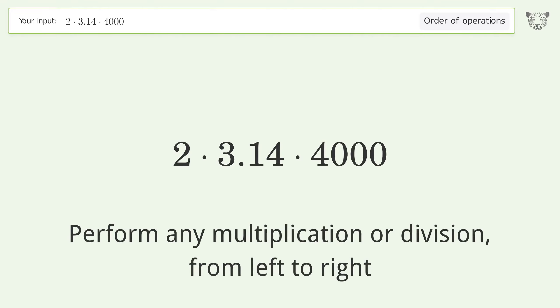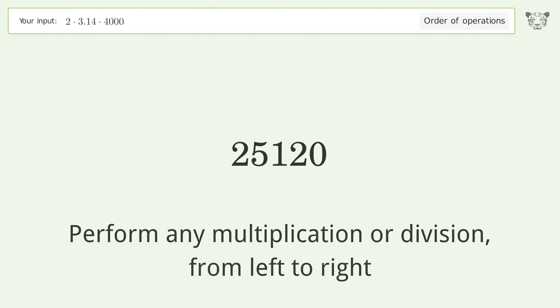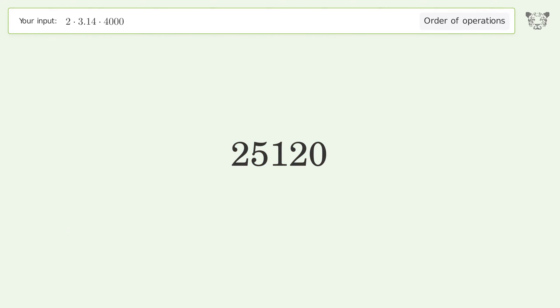Perform any multiplication or division from left to right: 2 times 3.14 equals 6.28; 6.28 times 4000 equals 25,120. So the final result is 25,120.